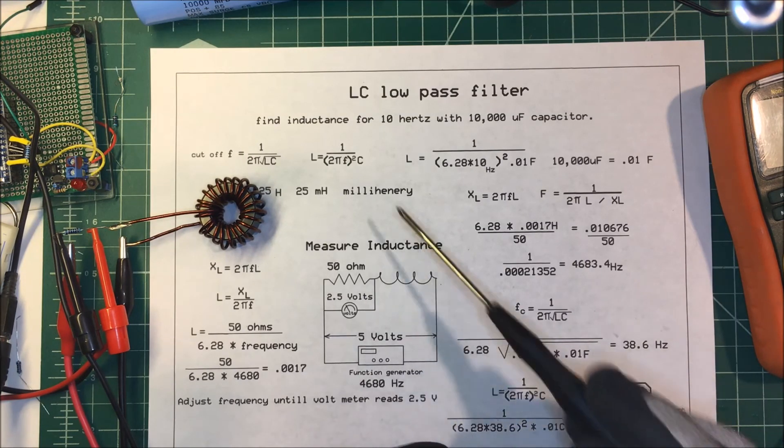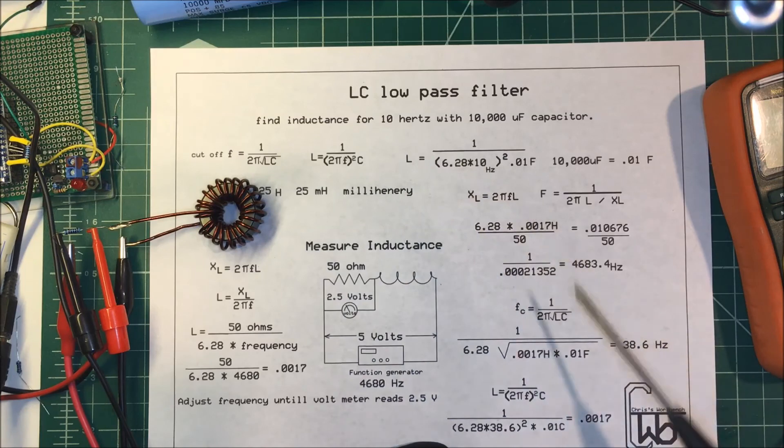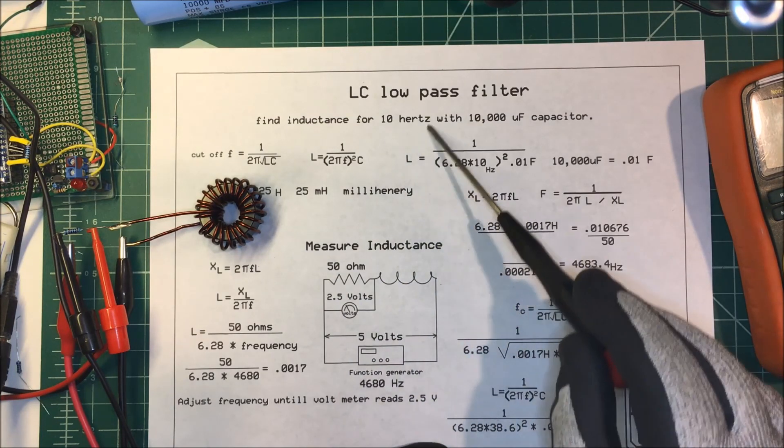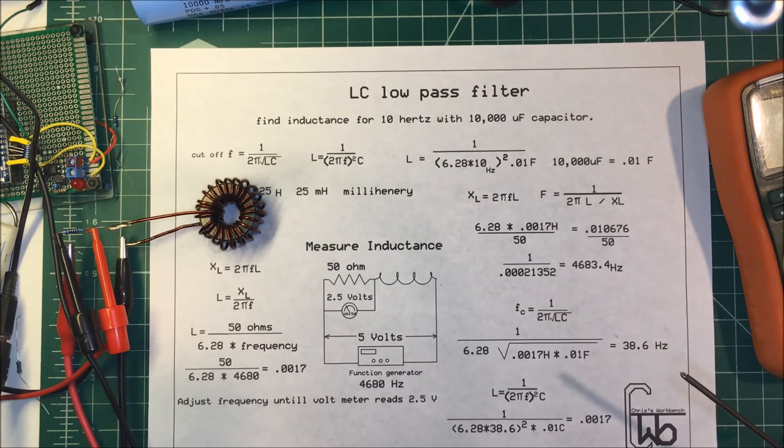So our low-pass filter will have a cutoff frequency of 38 hertz, which I think will be fine for what I'm using it for. That's our LC low-pass filter, thank you.